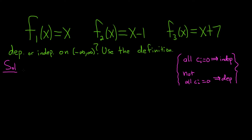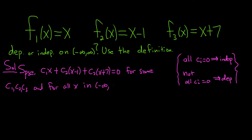So we'll start by assuming that we have a linear combination of these functions. Suppose that we have c₁x + c₂(x - 1) + c₃(x + 7). This is called a linear combination of the functions. And suppose this is equal to zero for some c₁, c₂, c₃, and for all x in this interval here, negative infinity to infinity. So we've started by assuming we have a linear combination equal to zero.